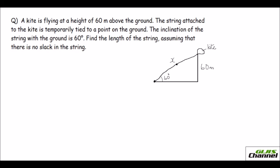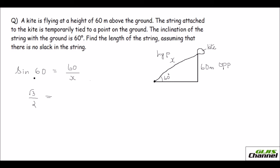What is given is the opposite side of 60 degrees, and what needs to be found is the hypotenuse side. So we use sine since it involves opposite and hypotenuse. Sine 60 equals opposite over hypotenuse, which is 60 divided by X. Sine 60 is root 3 over 2. In another video I showed how to find these basic angle values. If using a calculator, make sure it is in degree mode.